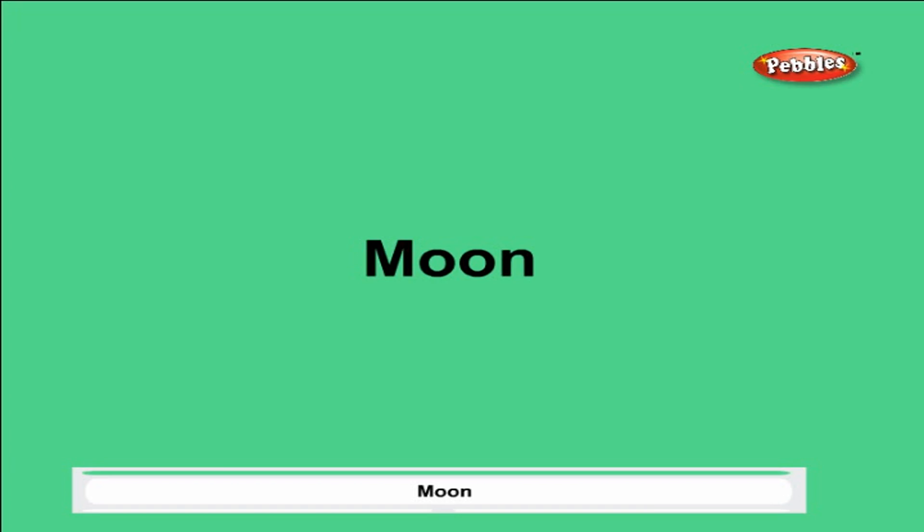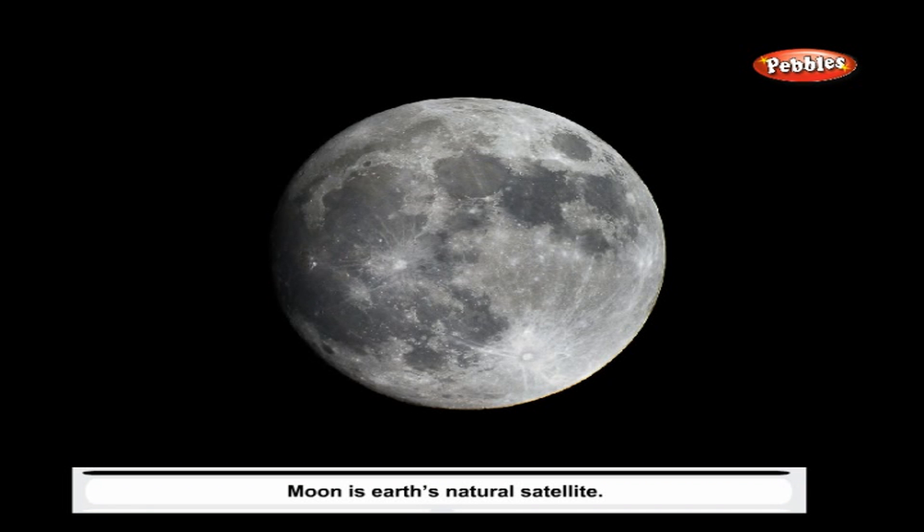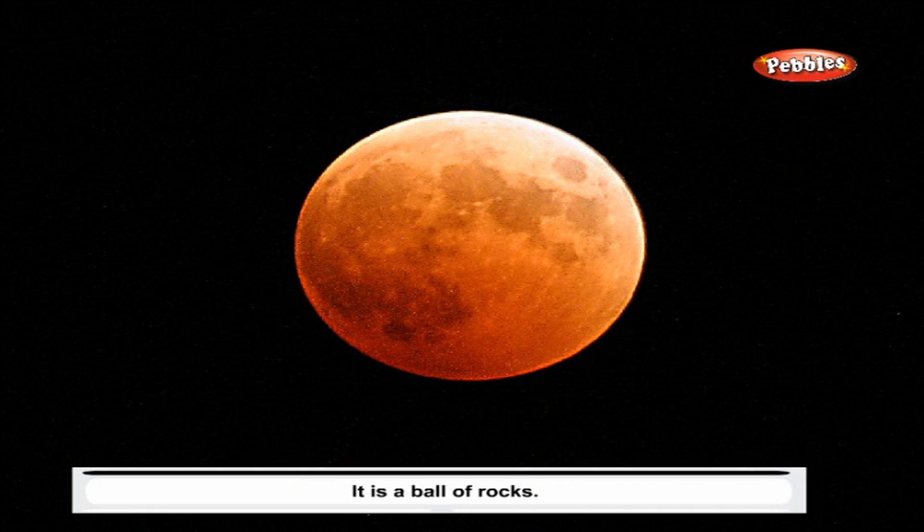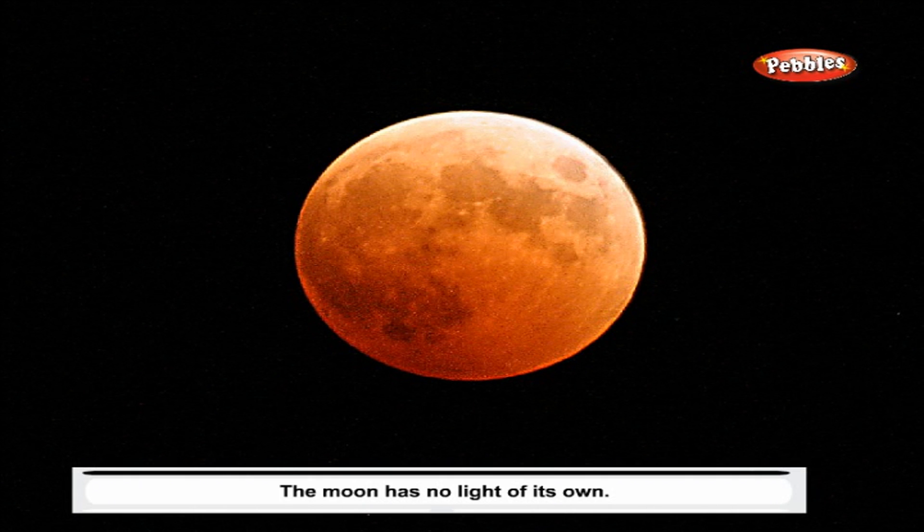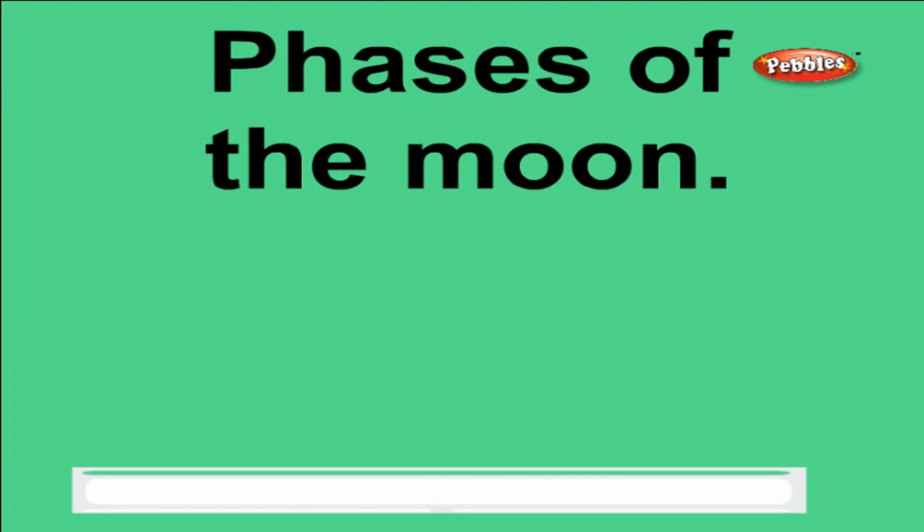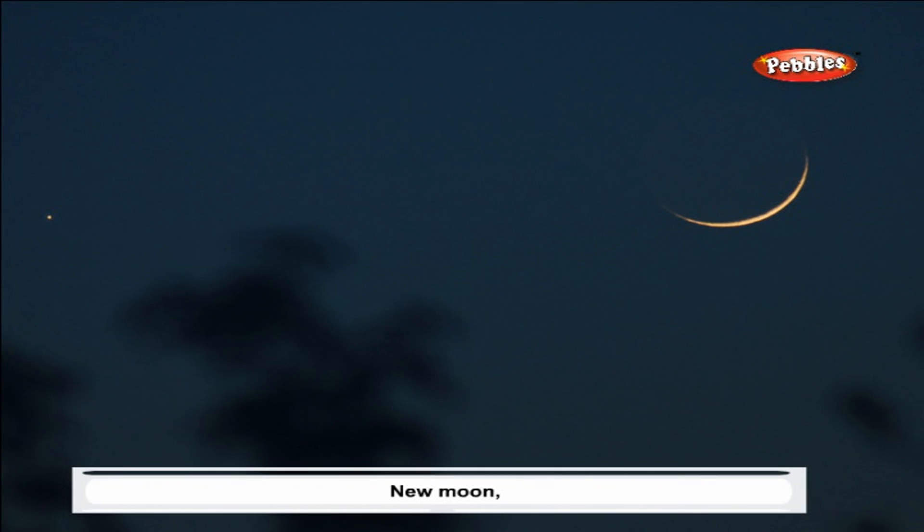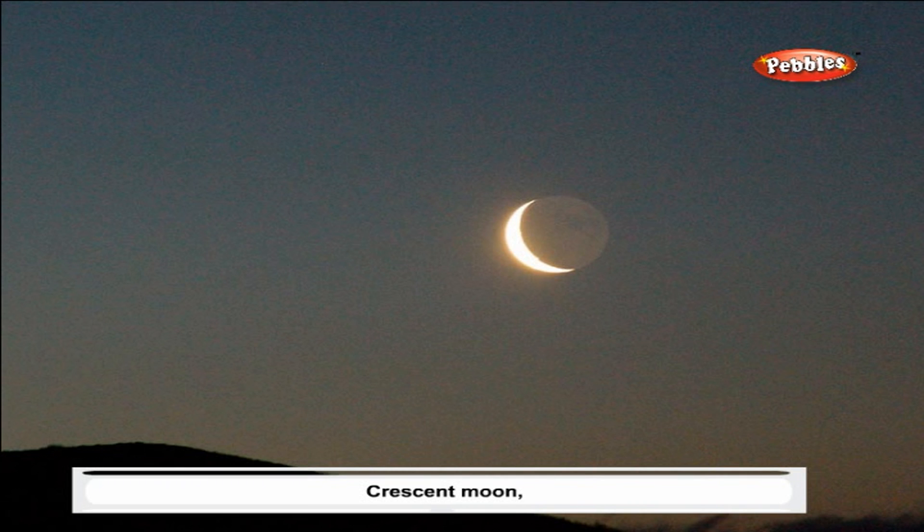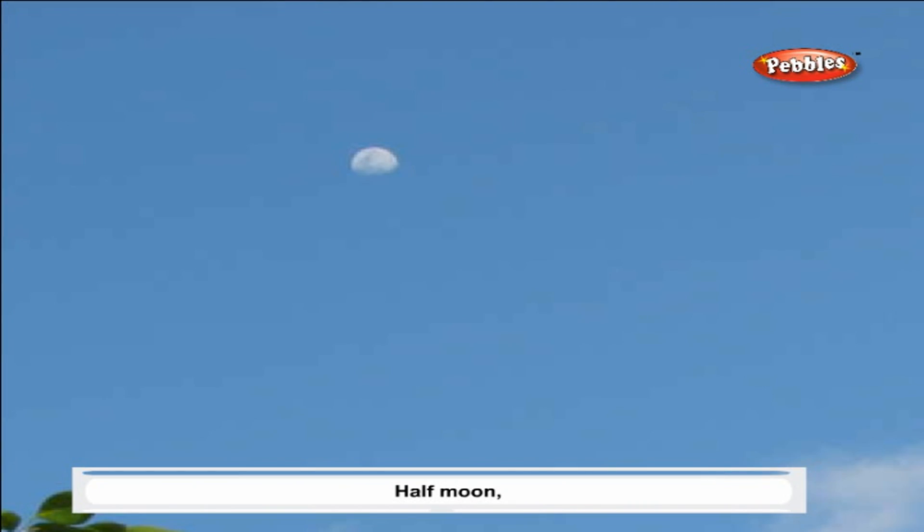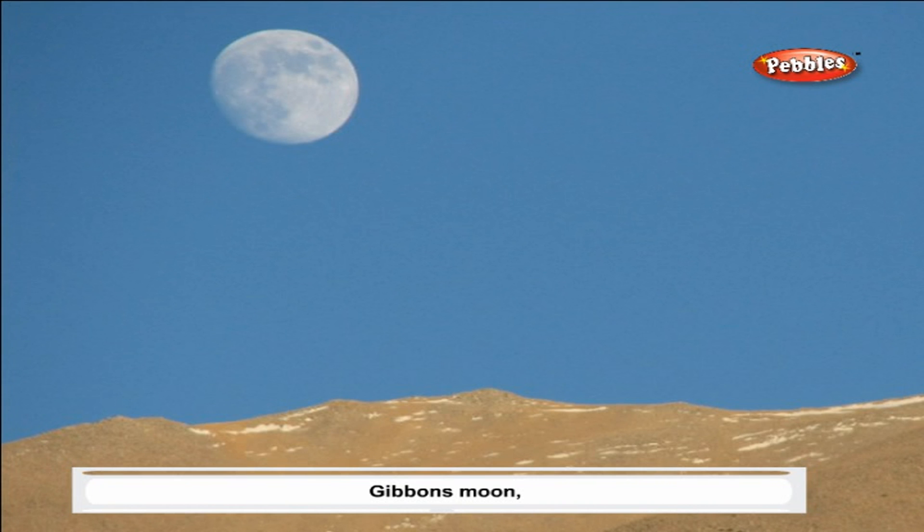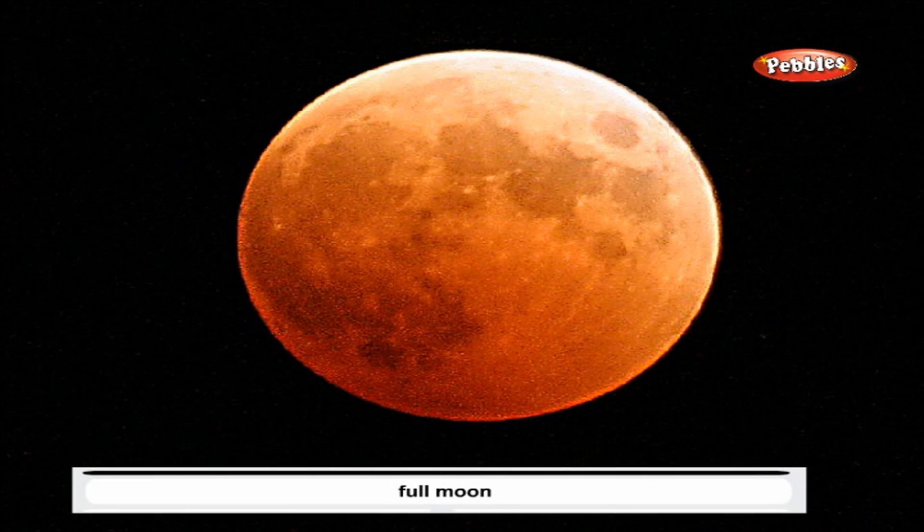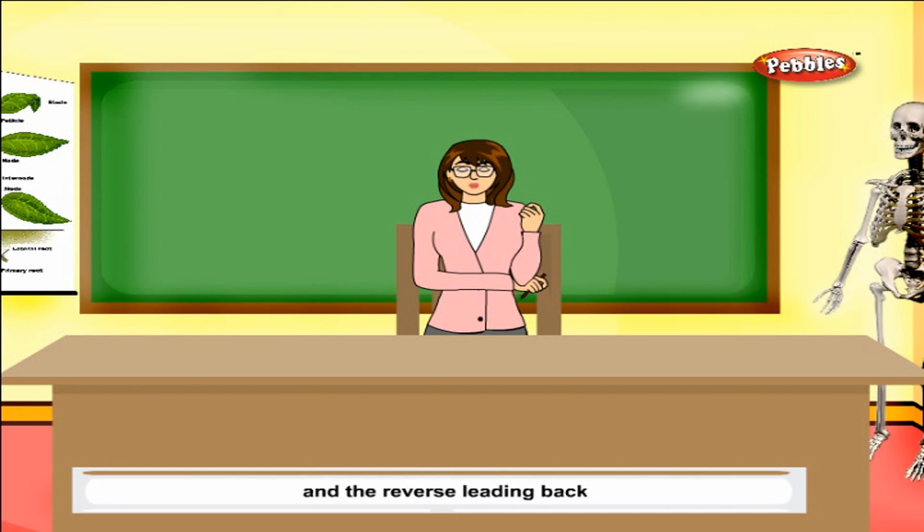Moon: Moon is earth's natural satellite. It is a ball of rocks. The moon has no light of its own. Phases of the moon include new moon, crescent moon, half moon, gibbous moon, full moon and the reverse leading back to a new moon.